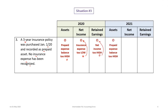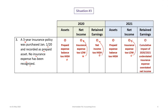Carrying into 2021, since no insurance expense has been recognized, prepaid insurance continues to be overstated. Insurance expense continues to be understated, resulting in overstated net income. Retained earnings are overstated by twice as much — the error is compounding, as both 2020 and 2021 insurance expense went unrecorded, so retained earnings are overstated by two years' worth.